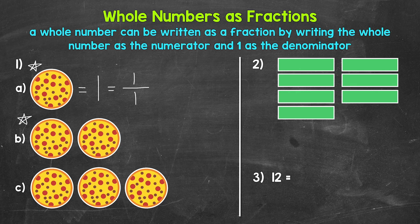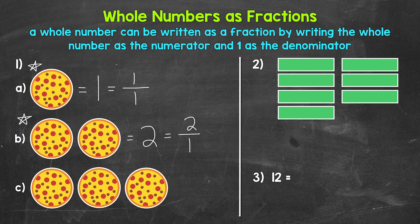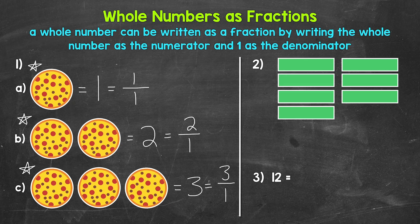Moving on to B, we have two whole pizzas. Each pizza is just one part, so one is our denominator. We have two wholes, so two is our numerator. Our fraction is two over one. For C, we have three pizzas — three wholes. Each pizza is just one part, so one is our denominator, and three is our numerator. Our fraction is three over one.